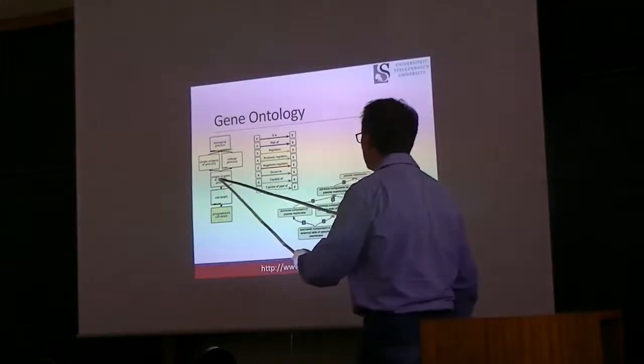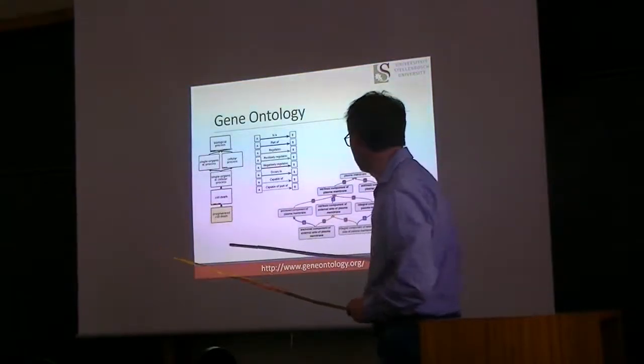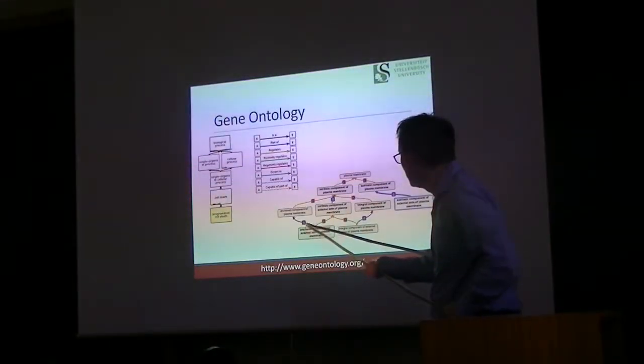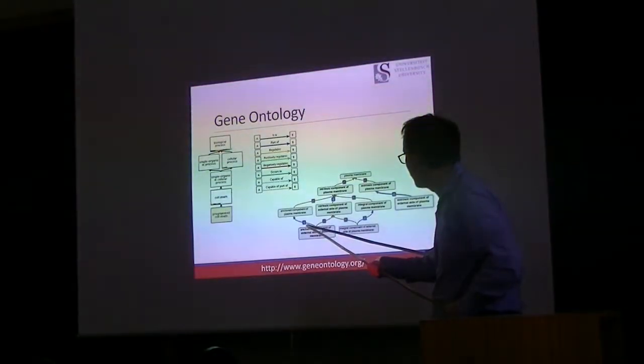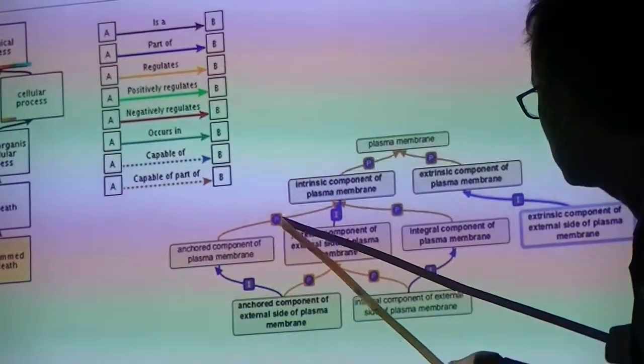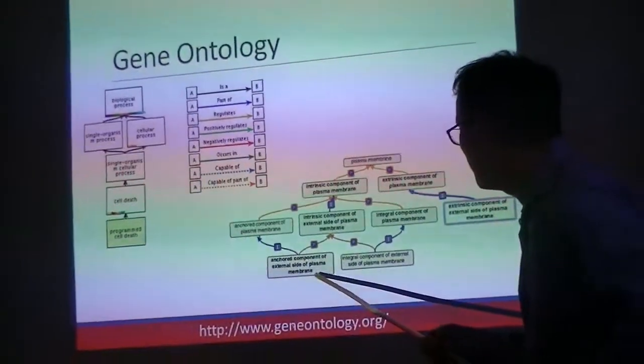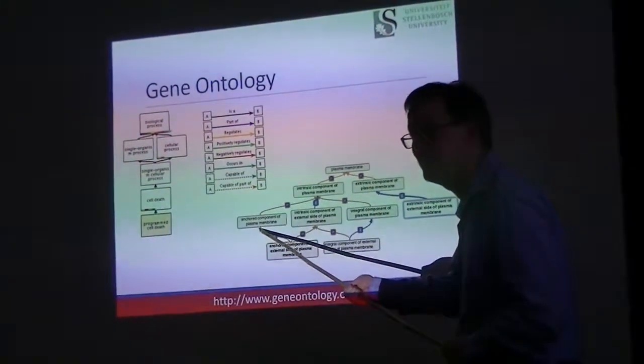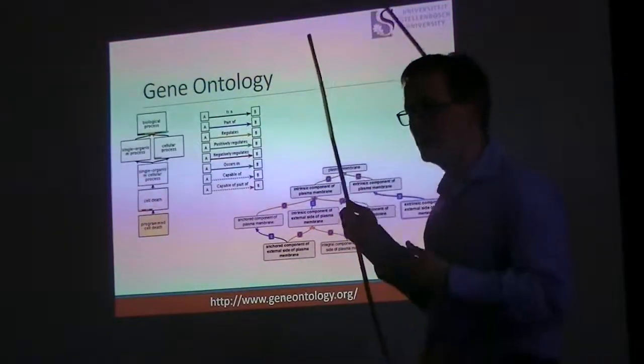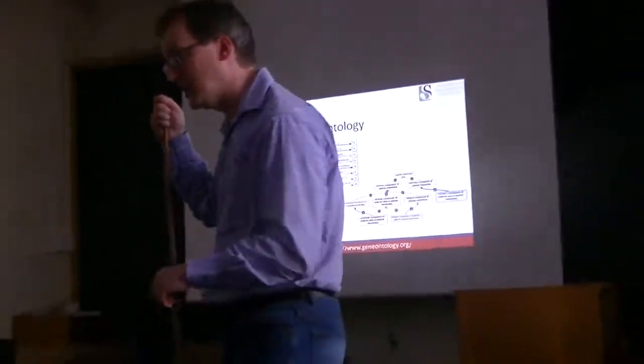What you can tell is that we've been navigating our way layer by layer down through the biological process tree until we get to apoptosis. These little colors associated with these edges tell us which of the relationships tie into that. This other image is not using the same color coding. We have an anchored component of an external side of plasma membrane. That is an anchored component of plasma membrane, which is part of an intrinsic component of plasma membrane. These relationships help us to connect the different concepts within the gene ontology.